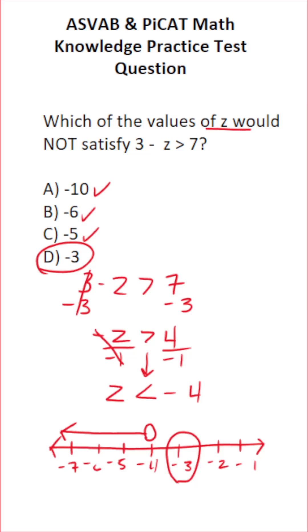You could see that visually down here, but if you wanna see it algebraically, let's go ahead and see what that looks like. We have three minus z greater than seven. And we're saying in this case, z is negative three. So let's plug in negative three for z.